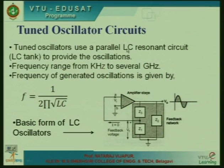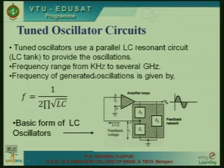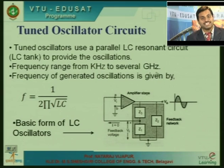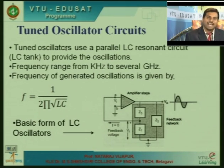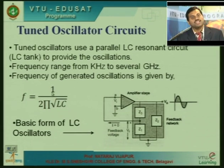We will move to tuned oscillator circuits, widely used in communication applications. The limitation of RC oscillators is they can only produce oscillations in the audio range. Tuned oscillators make use of inductance L and capacitance C in the feedback circuit to generate oscillations. They can achieve frequencies from kilohertz to several gigahertz. The frequency of generated oscillations is given by 1/(2π√LC).